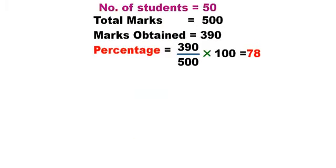Suppose the number of students is 50 and total marks are 500. A particular student scores 390 marks. Then we calculate the percentage: percentage equals marks obtained divided by total marks into 100. So, 390 divided by 500 into 100 equals 78. So, that particular student has 78 percent.